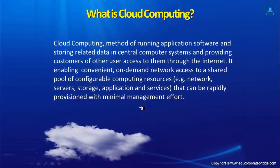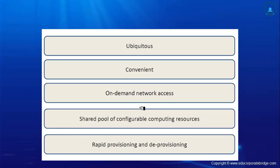To elaborate further on the definition: 'ubiquitous' means the infrastructure is rapidly available, and 'convenient' means easily reachable so you can access your data conveniently. On-demand network access means whenever required you can put data on the network, control access levels — read, write, or view only — or remove access to keep data secure. 'Shared pool of configurable computing resources' means one storage space or one printer can be accessible to many users. And rapid provisioning and deprovisioning refers to scaling resources up or down quickly.